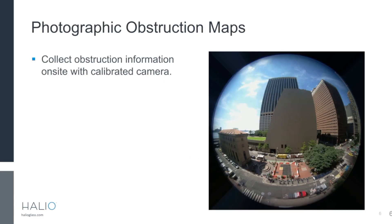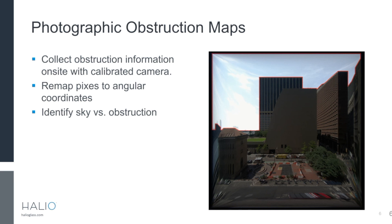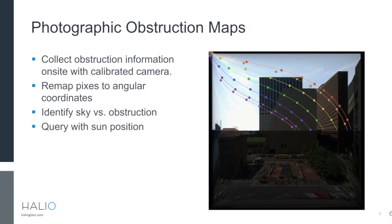The way photographic obstruction mapping works is essentially you use a camera to collect information about obstructions exterior to the window. They're remapped to angular pixel coordinates. Then you can simply trace the area of sky that's visible, and you can query that using sun positions in real time so you know when the window is in shadow or not. I'll go into all this in more detail.